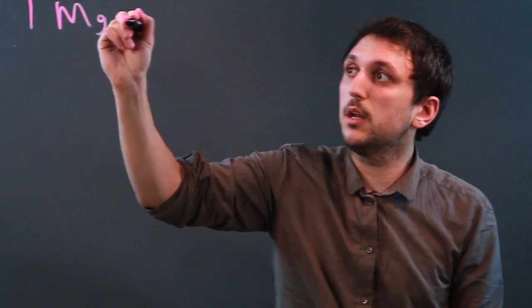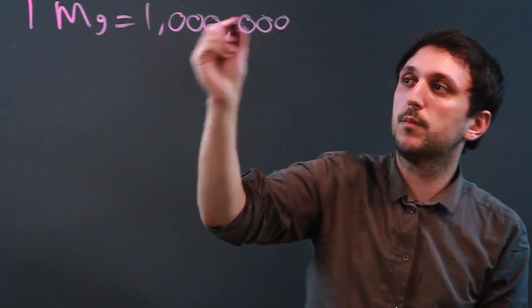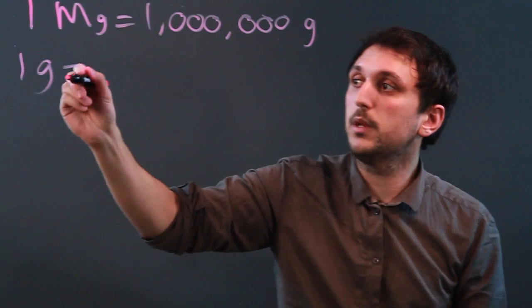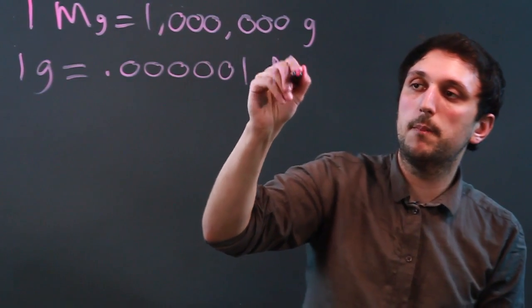Well, one megagram equals one million grams. So, one gram equals .0000001 megagrams,